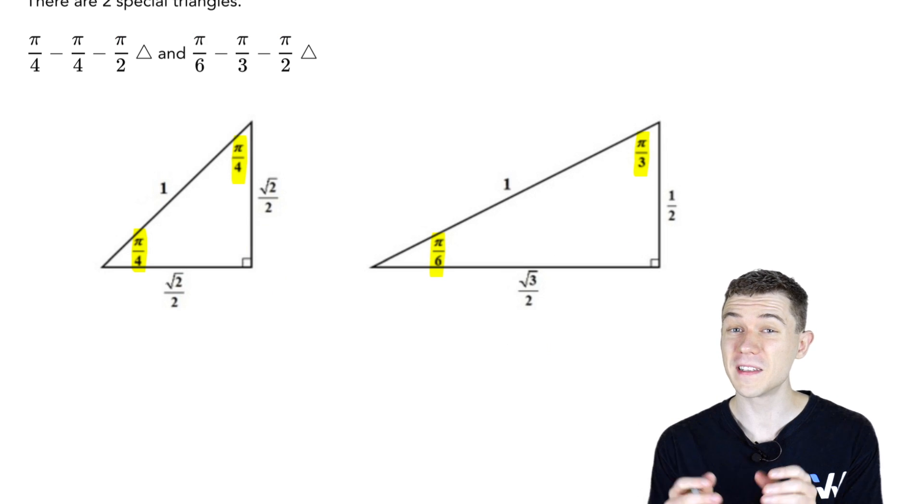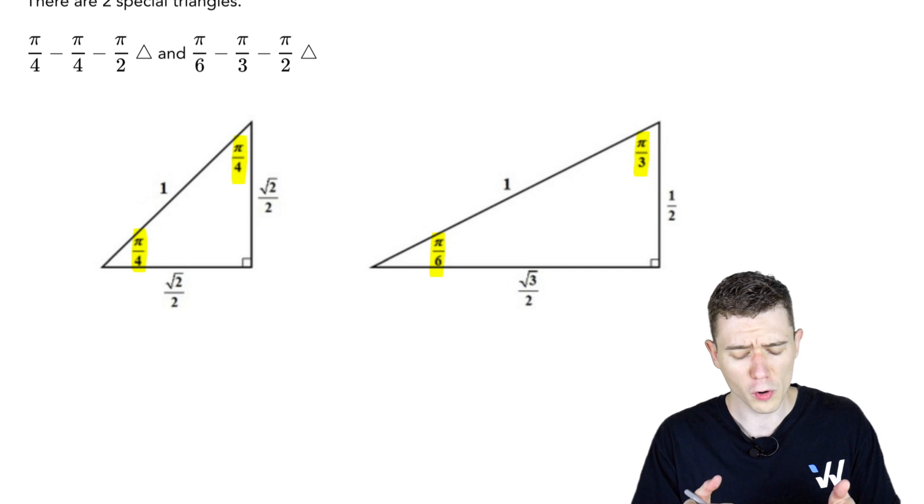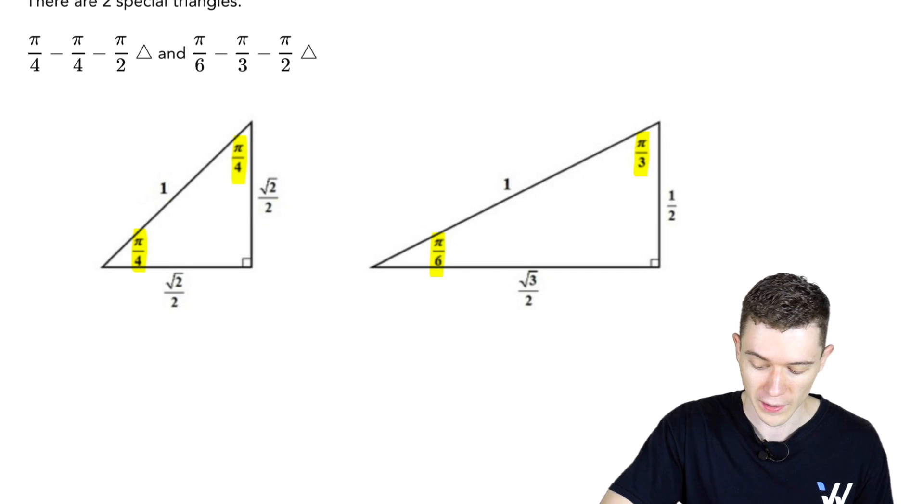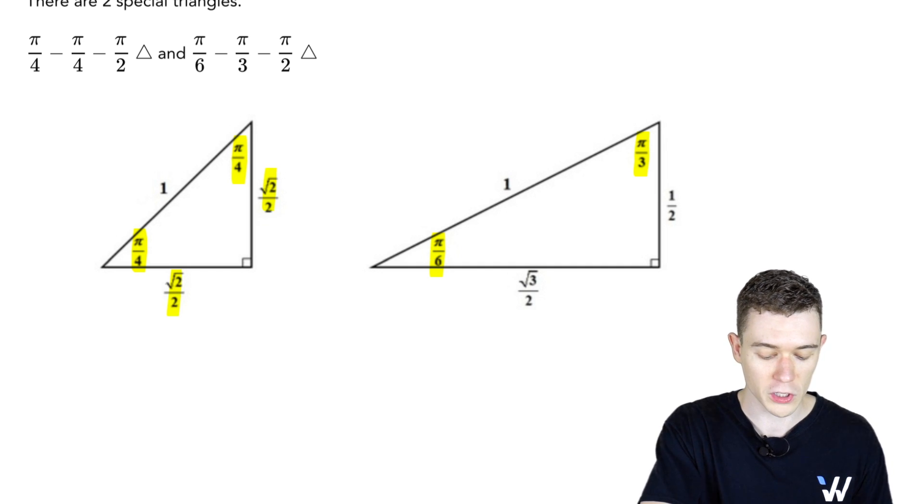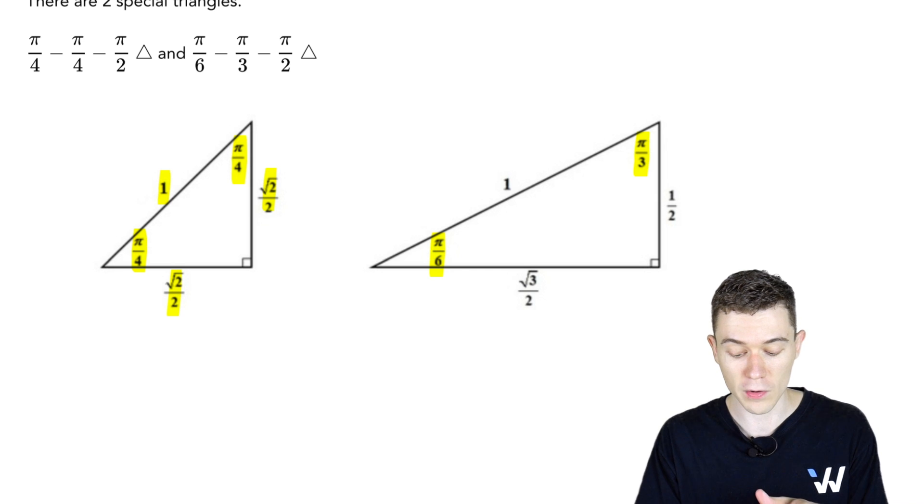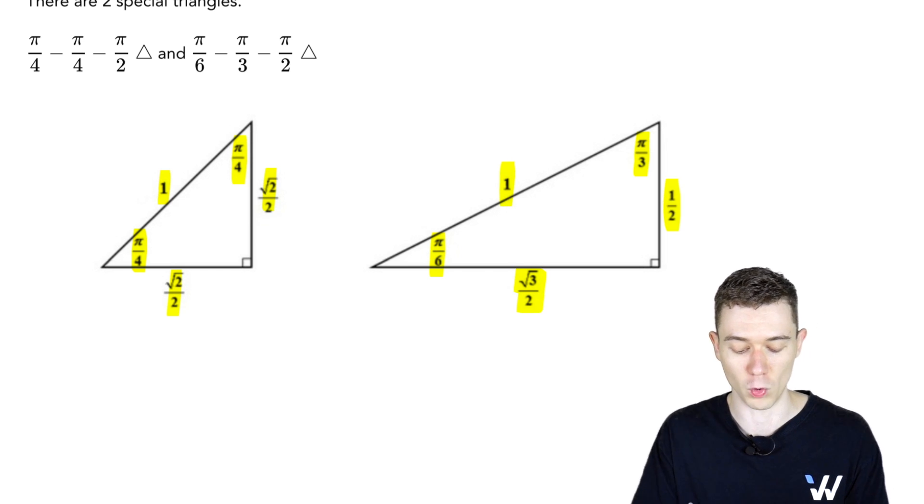And these are a very good set of triangles to memorize. Take a look at this 45-45, or we should really say pi over 4, pi over 4-90 triangle. It has legs root 2 over 2 in relationship to hypotenuse of 1, whereas the pi over 6, pi over 3 triangle has legs relationship to root 3 over 2, 1 half, and 1.